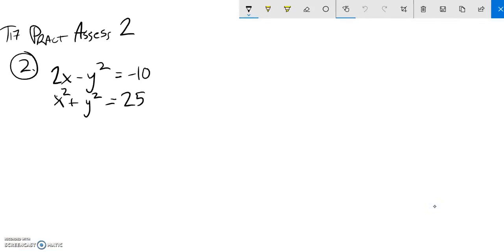We are going to solve this system of equations. They're nonlinear, so I'm not going to use a matrix. I'm just going to see if I can do some substitution or elimination. I notice I have a negative y squared here and a positive y squared there, so how about I just add those equations together.